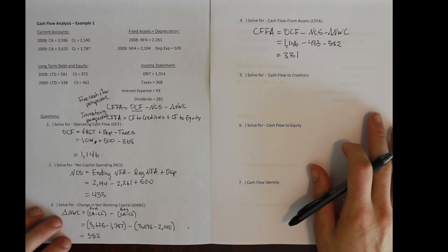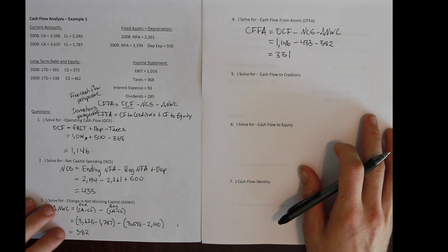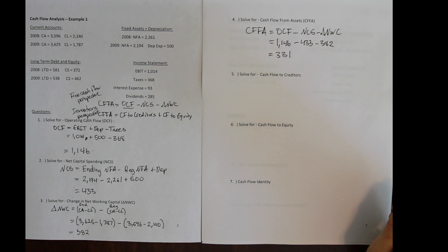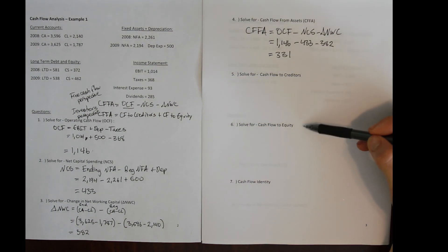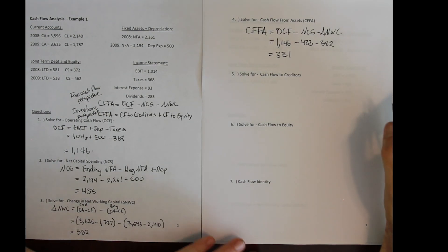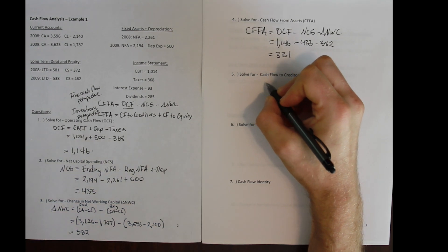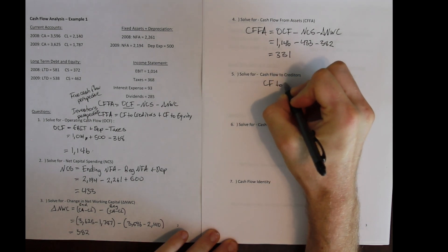That 331 is what remains after covering all investments, paying all bills and employees, and keeping operations running. This money doesn't disappear — it goes back to the people who invested in the firm, either creditors who made loans or equity holders who own shares. We can solve for the other side of the identity to verify our numbers.